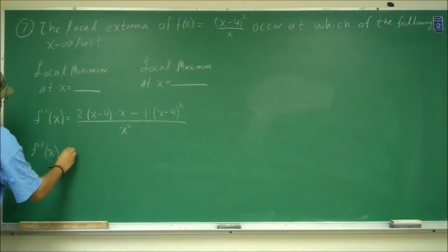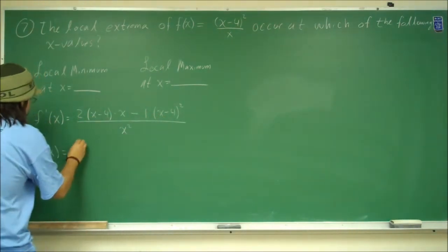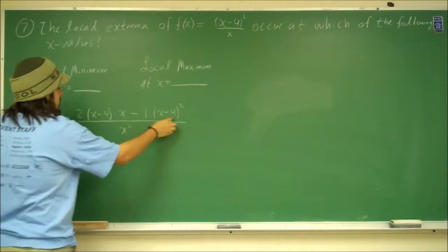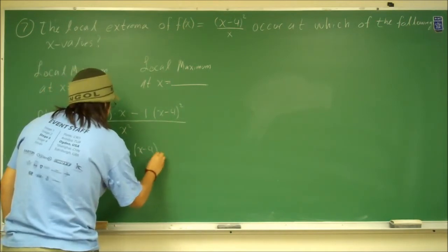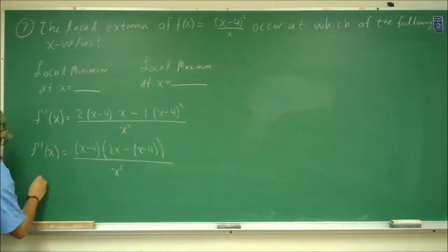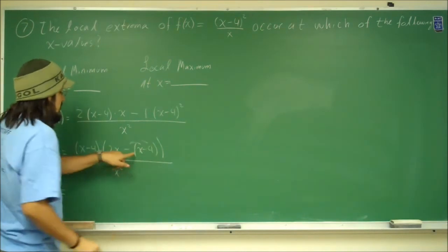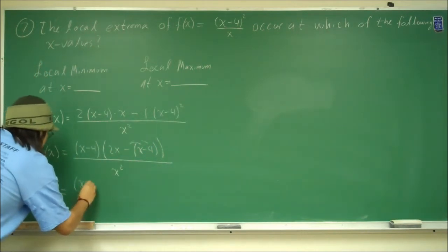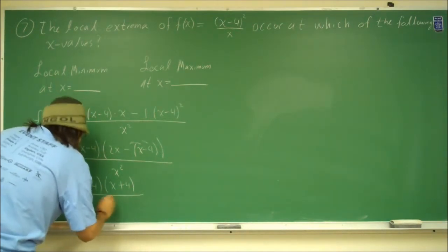The top of this is done. Now we'll do some algebra and simplify. Go ahead and factor out (x - 4) — it's a common term. So we're left with (x - 4) on the outside, and on the inside we're left with 2x minus one more (x - 4). We factored out 1, but there's a 2 here so there's 1 left over. That's all divided by x squared. Now we distribute the minus: 2x minus x is just x, and minus times minus 4 is plus 4. So we have (x - 4)(x + 4) divided by x squared. This is the first derivative.